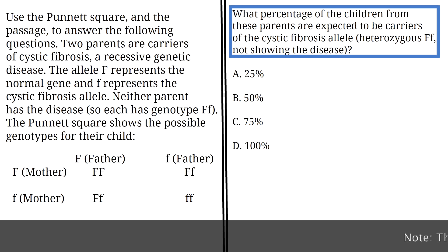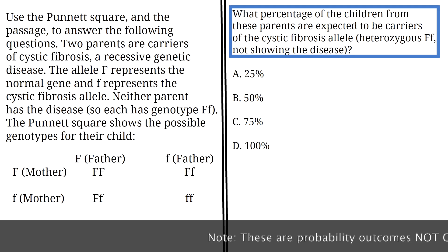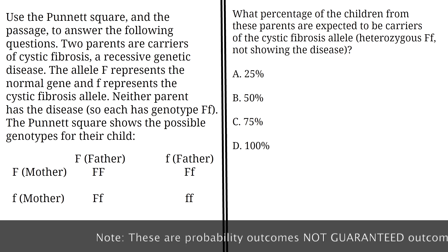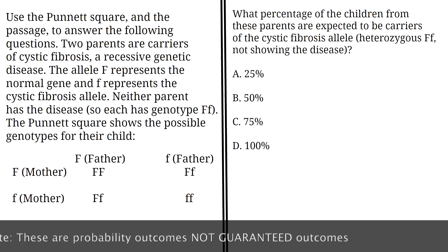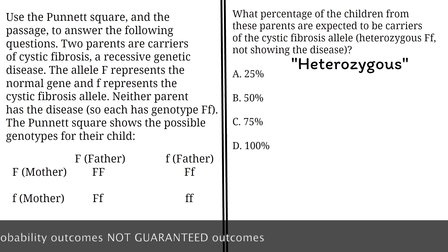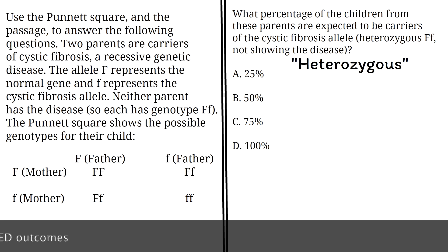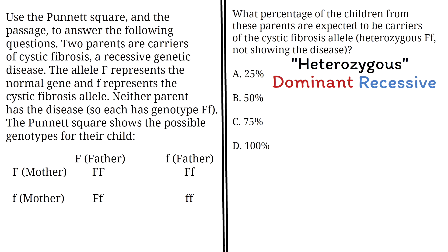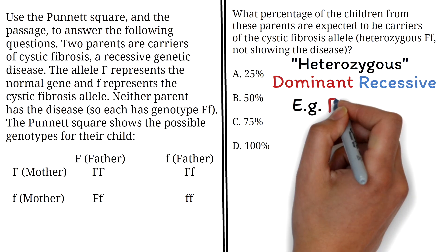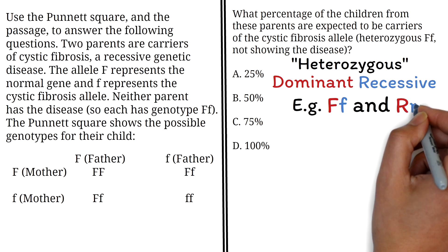What percentage of the children from these parents are expected to be carriers of the cystic fibrosis allele — heterozygous Ff — not showing the disease? Before we solve the question, there are a few more terms we need to know. A genotype can be heterozygous, which simply means that there are two different alleles in a genotype — a dominant allele and a recessive allele. Examples of heterozygous genotypes are capital F lowercase f, and capital R lowercase r. There are other related terms that might not apply directly to this question but could appear on your GED science test.